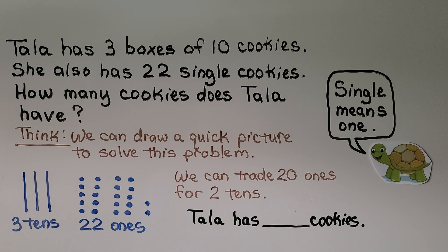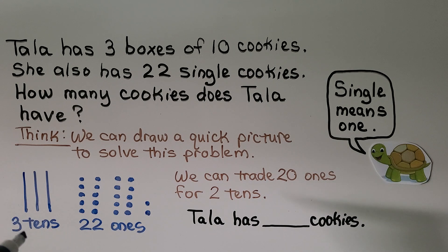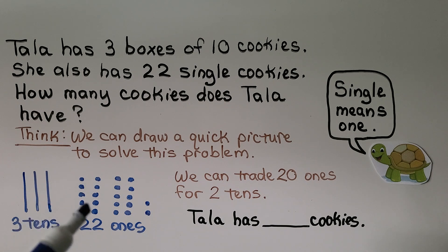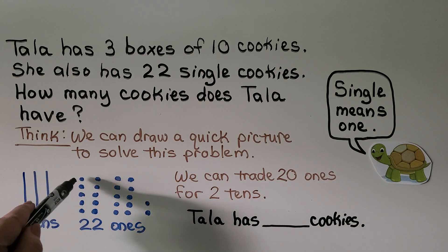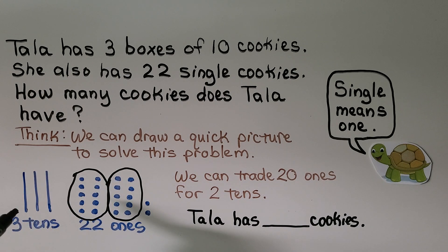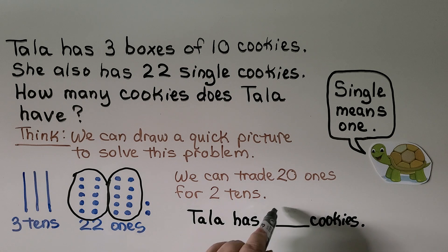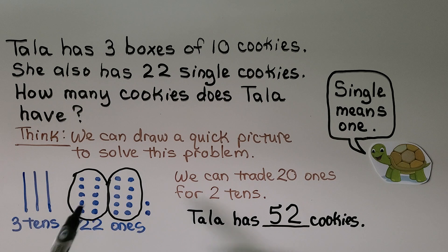Tala has three boxes of 10 cookies and 22 single cookies — single means one, so she has 22 ones. How many cookies does Tala have? We can draw a quick picture to solve this. We make a line for each 10: one, two, three boxes of 10. She has 22 single cookies, so we make 22 little dots. We can trade 20 ones for two 10s by grouping 10 ones here to be a 10, and this group of 10 to be another 10. Now we have 10, 20, 30, 40, 50 and two ones. That means Tala has five 10s and two ones — she has 52 cookies.